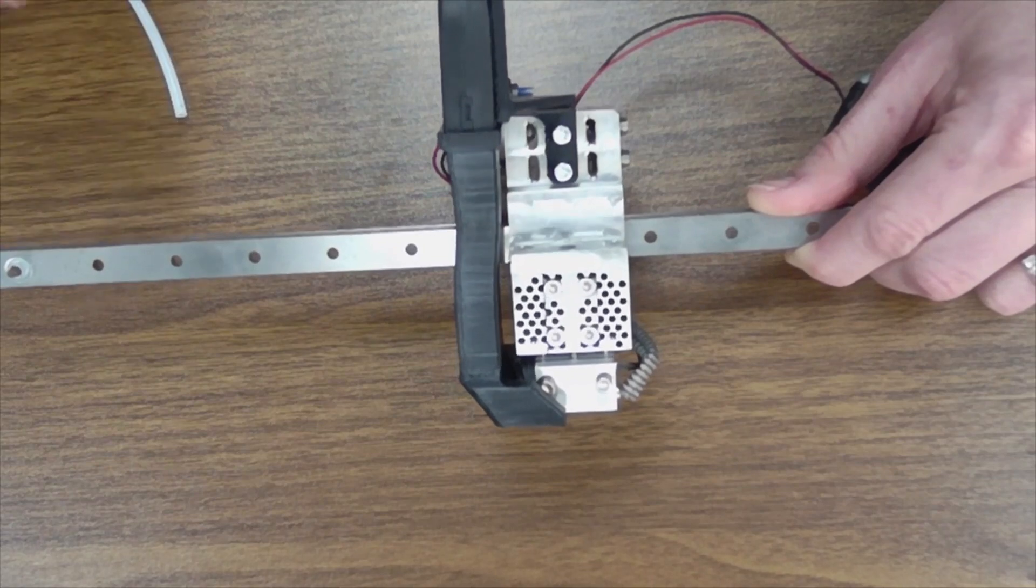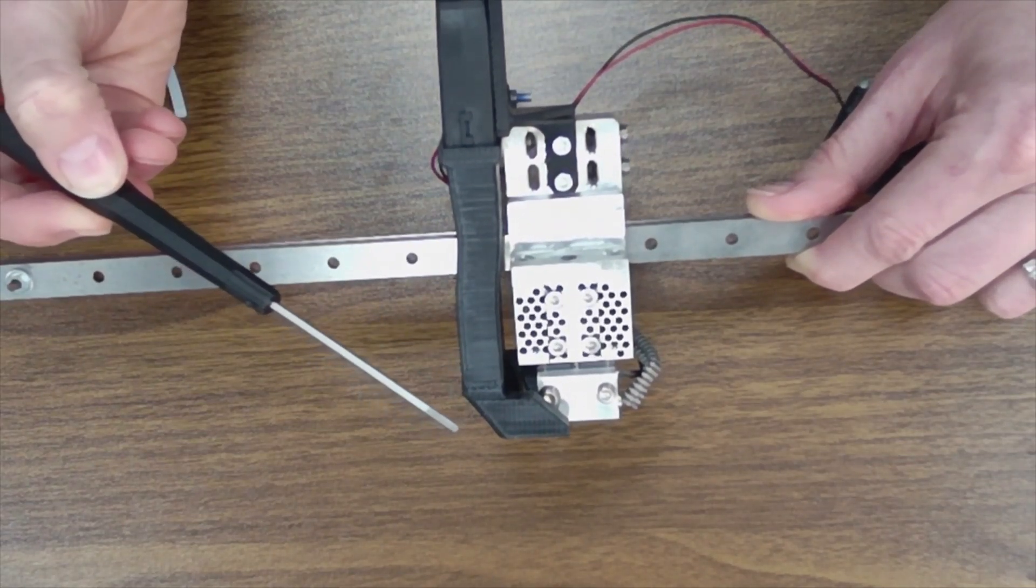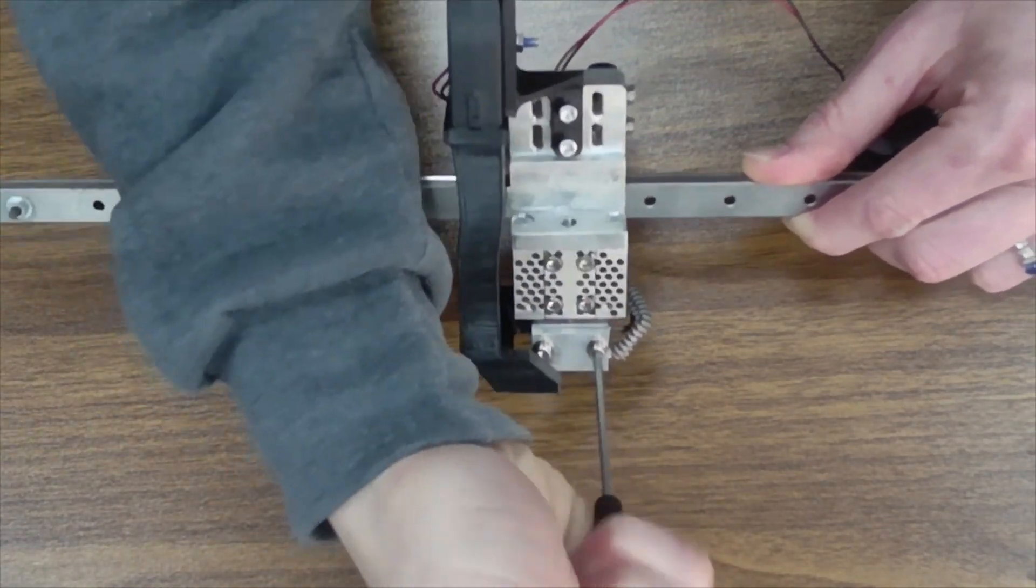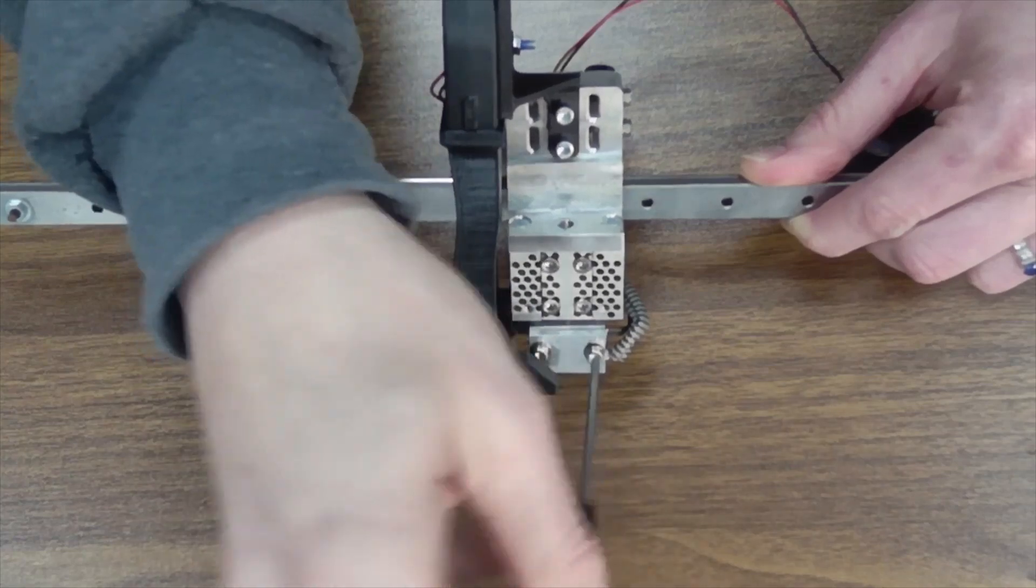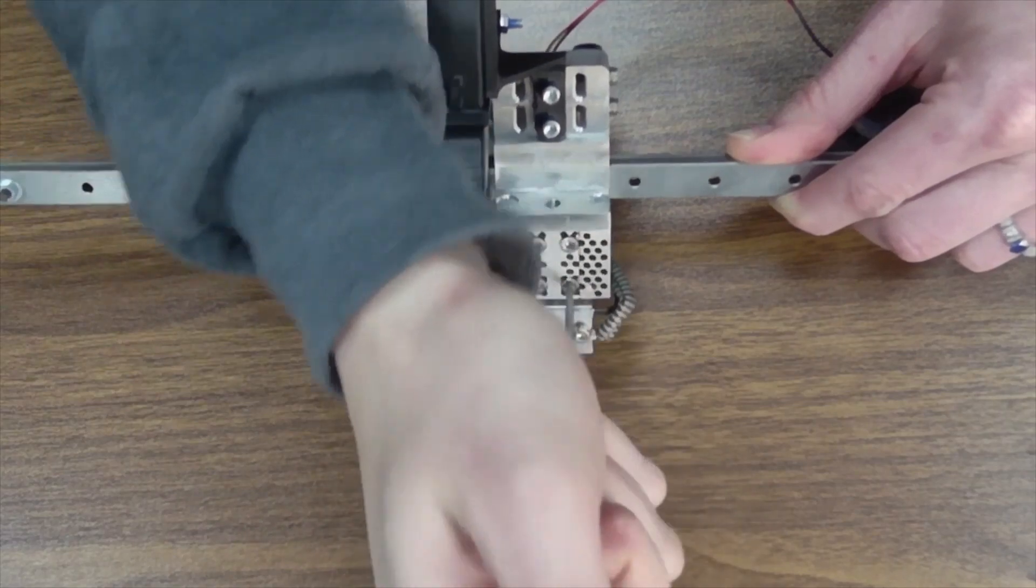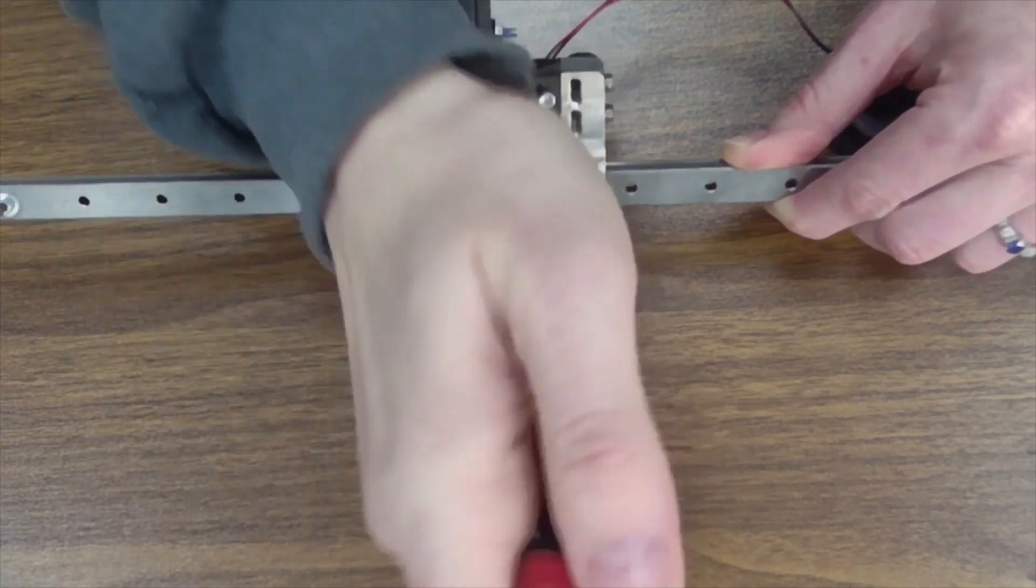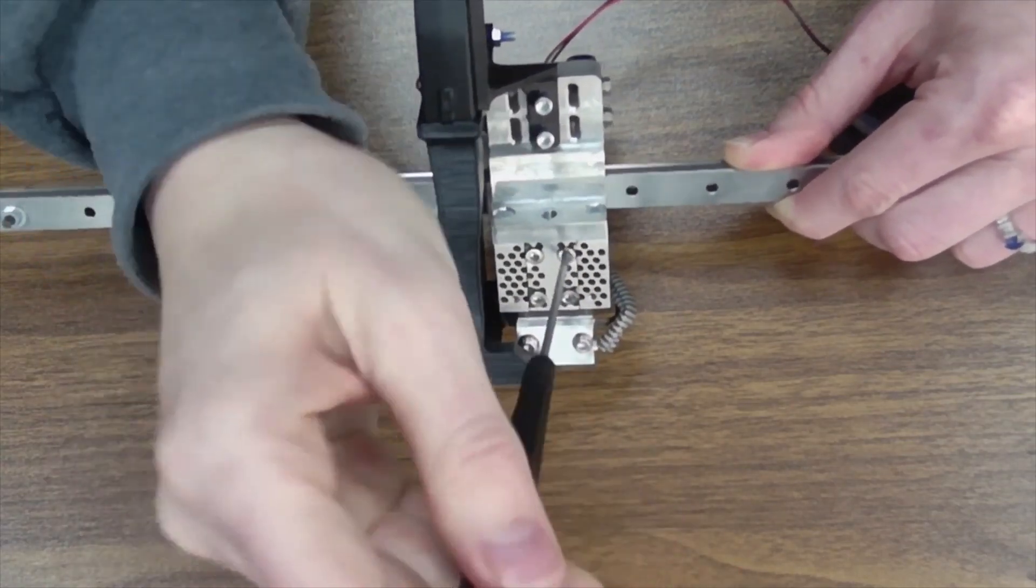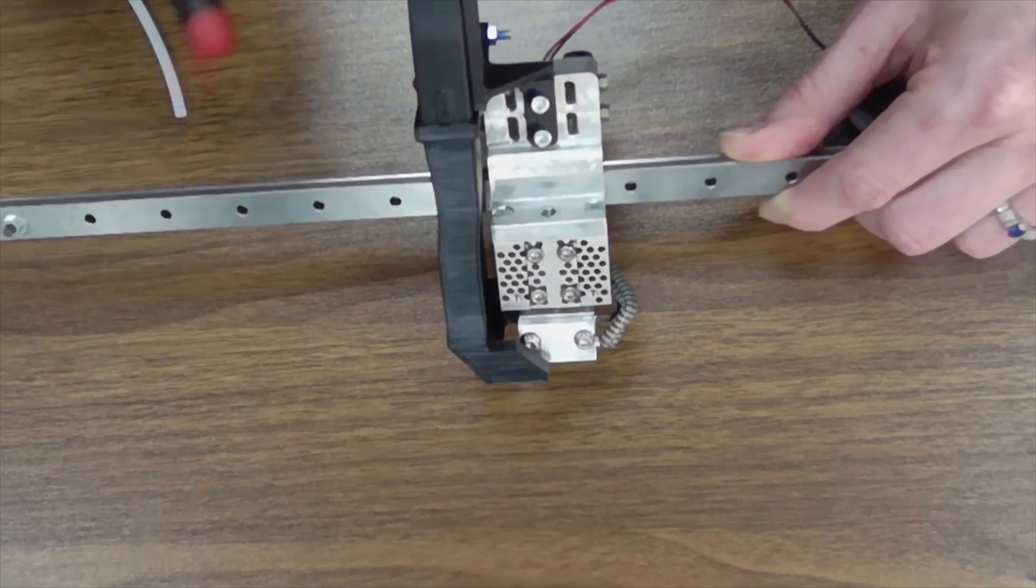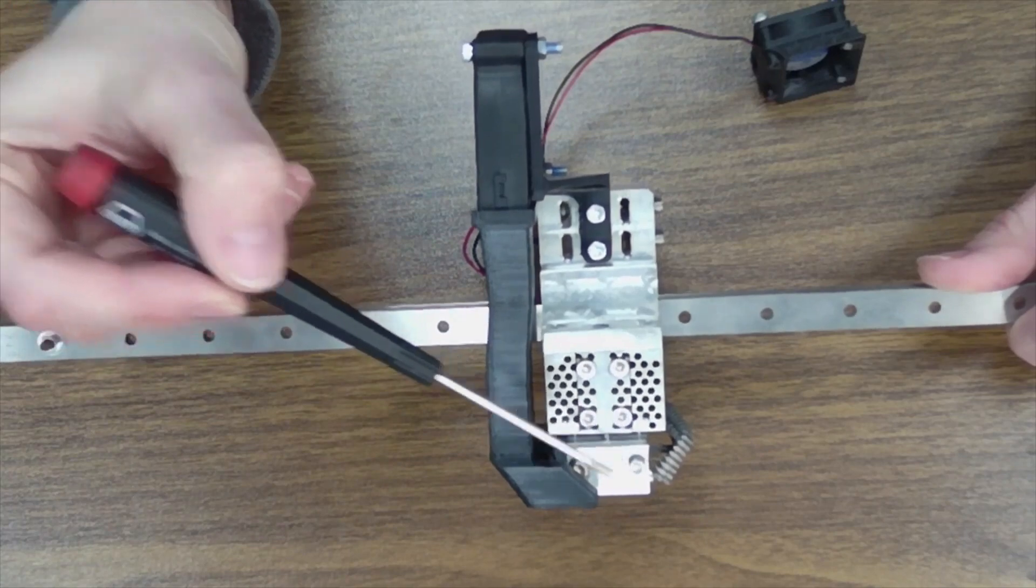Now for the hot side bolts, I do recommend using a square tipped drive. Don't use a ball-end drive. These can sometimes be very tight and you don't want to round them out. So again, I'm just going to loosen these. So I have my six screws loose. So we've got our six screws loose here.